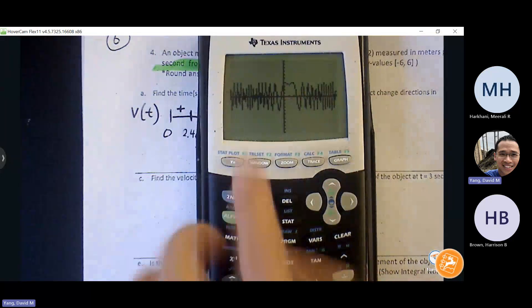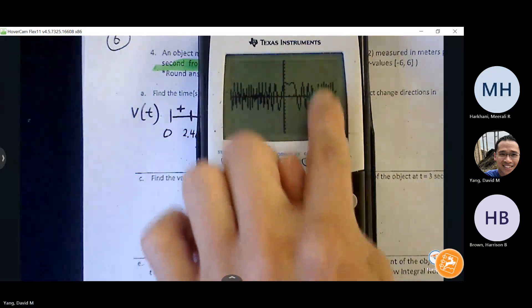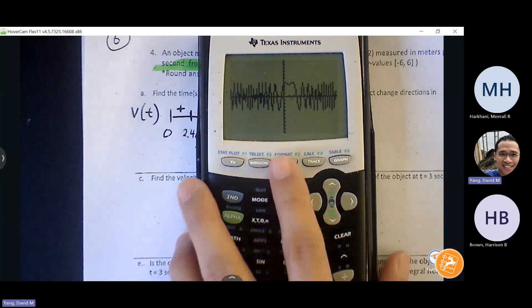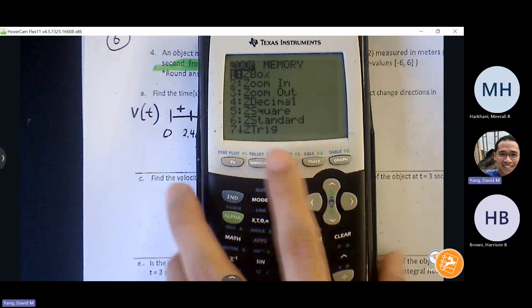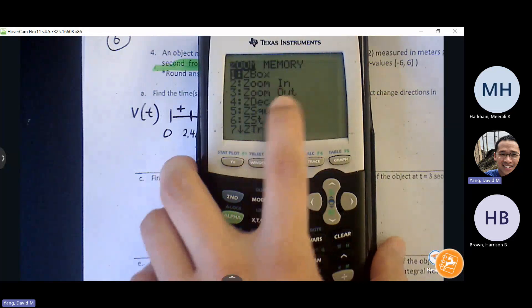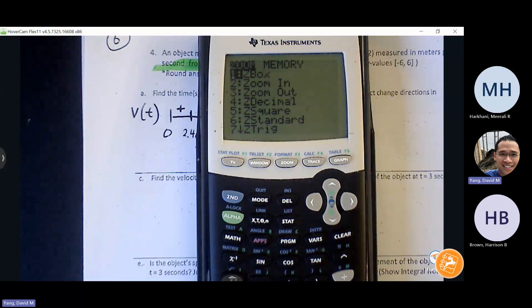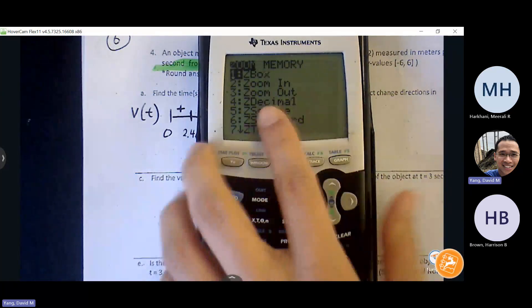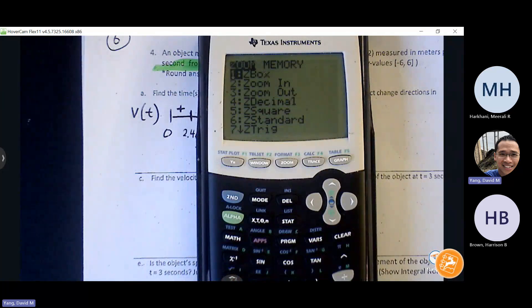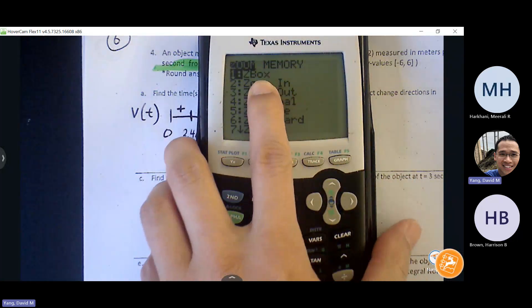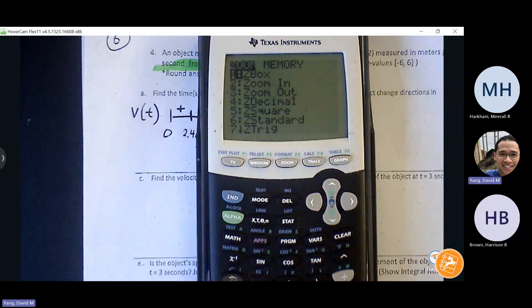So what we can do is we can actually draw a box around that region and not have to worry so much about what is the left and right end point of my window. So if you go to zoom, there's a couple of features here. There's zoom in and zoom out. These are not as useful. But the thing that's going to really help us is this ZBox here. If you click ZBox.